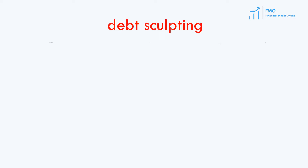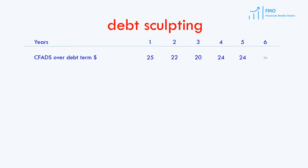Let's work through an example of debt sculpting. First, assume that we have 6 years. We have our CFADs over the debt term and our target DSCR is 1.45. Target DSCR is the same as the required DSCR by the lenders. Next, to get the debt service in year 1, we have to divide the CFADs by the target DSCR. So we have our debt service.